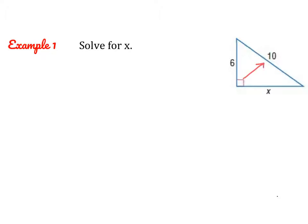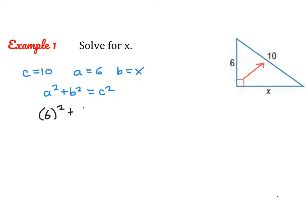I see that my hypotenuse is 10, so C must be 10. For A and B, it doesn't matter which one is which. So let's say A is 6 and B is X. Now we're just going to substitute those values into the Pythagorean Theorem. So we'll say 6 squared plus X squared equals 10 squared.